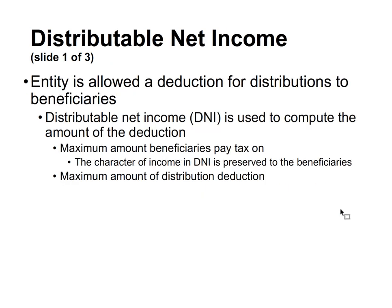Now we're talking about distributable net income (DNI), which is a very important concept. An entity is allowed a deduction for distributions to beneficiaries, and this is how a simple trust can avoid paying tax at the entity level — it's taxed at the beneficiary level through the distribution deduction. Distributable net income is used to compute the amount of that deduction, represents the maximum amount on which a beneficiary can be taxed, preserves the character of income as it flows through, and represents the maximum amount of the distribution deduction.